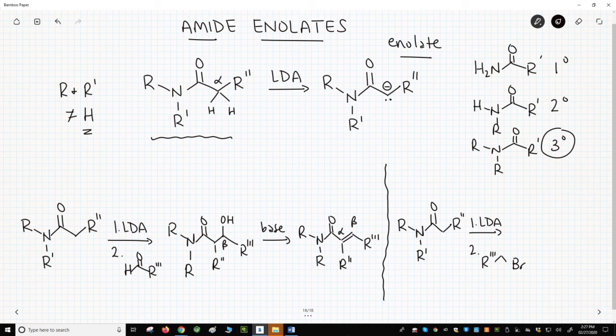Amide enolates can be alkylated with alkyl halides. It needs to be a primary halide to form amides with a new alkyl group off of the alpha-carbon.